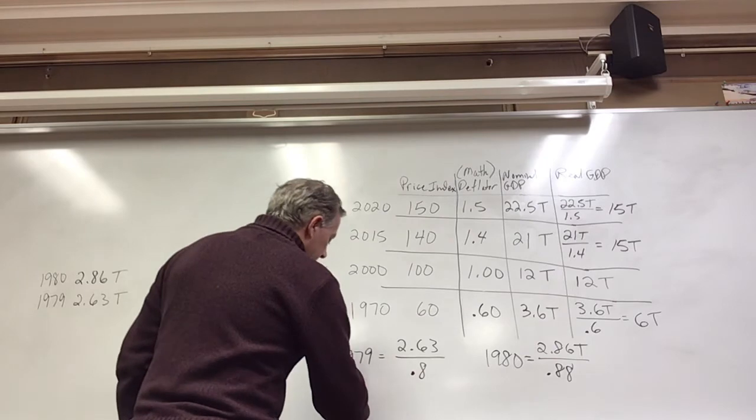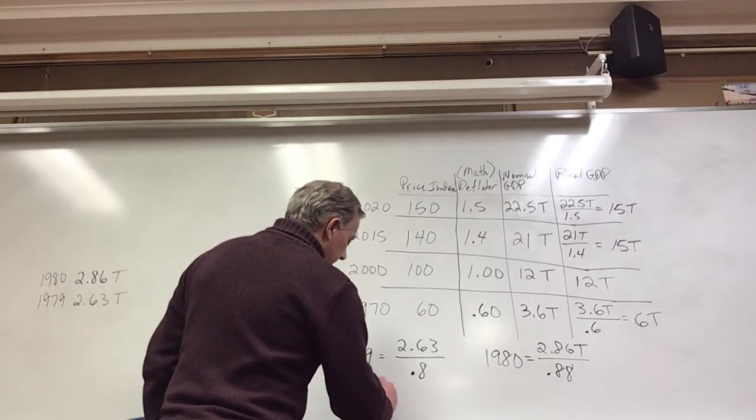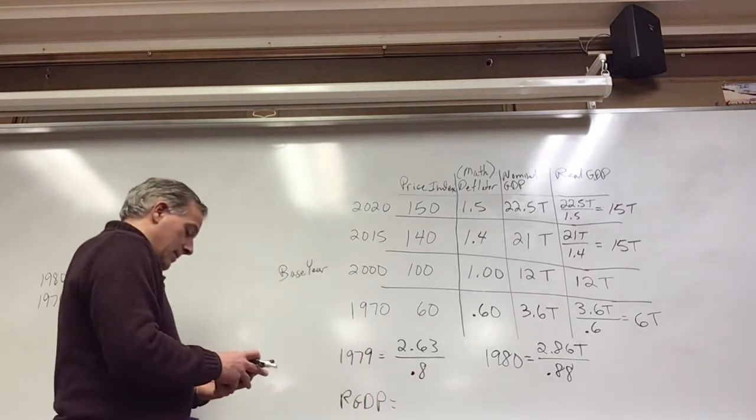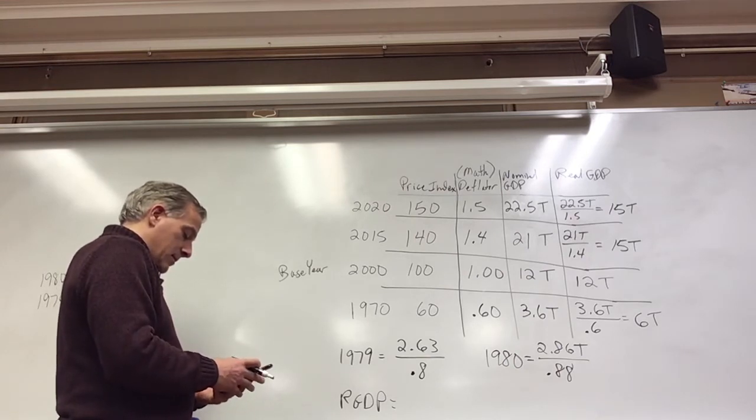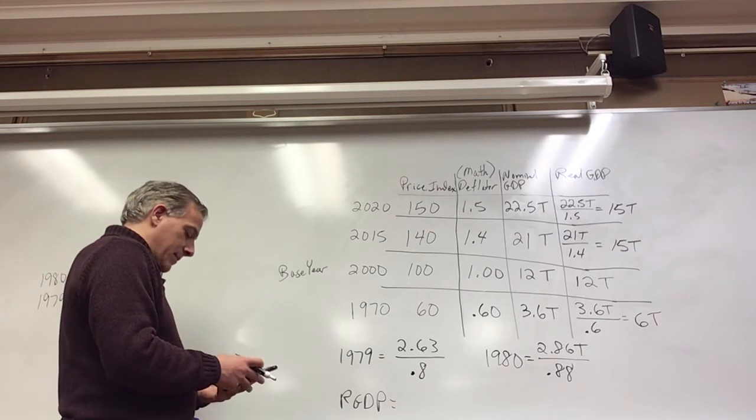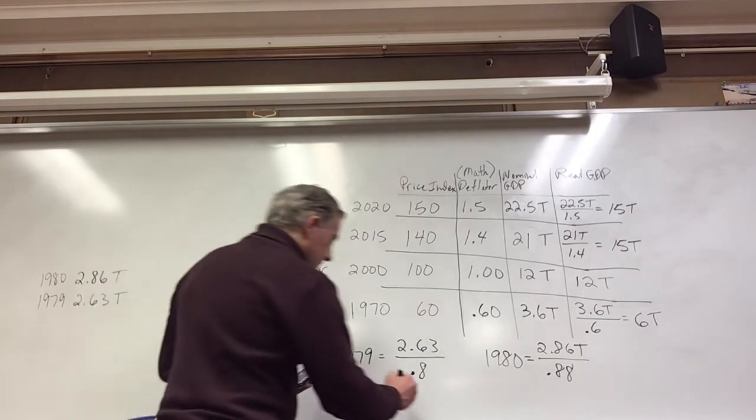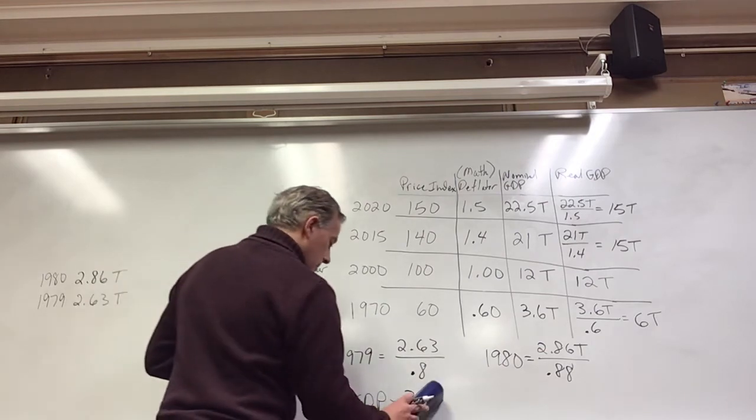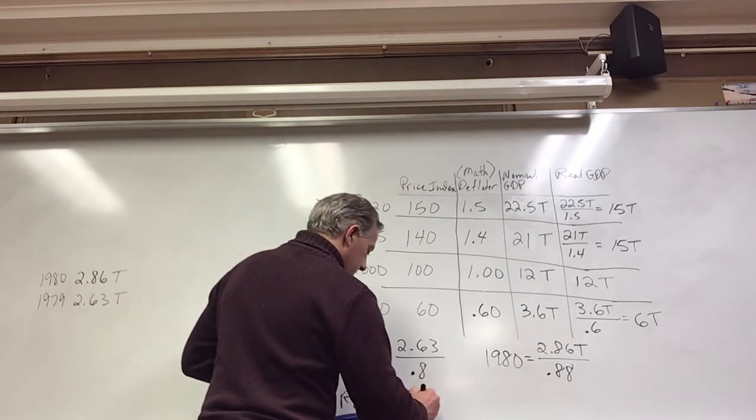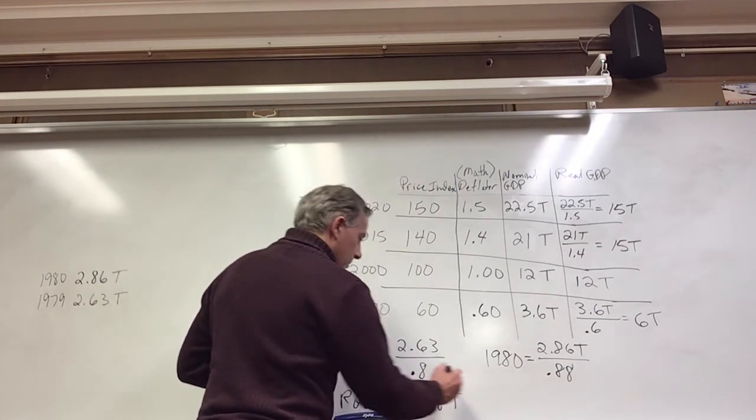Well, the real GDP for 1979 is 2.63 divided by 0.8, which is 3.28 trillion.